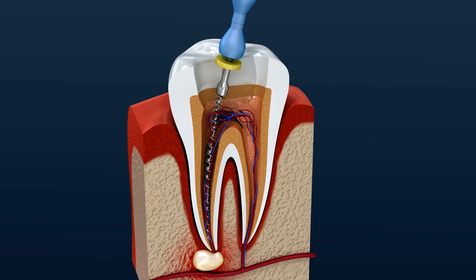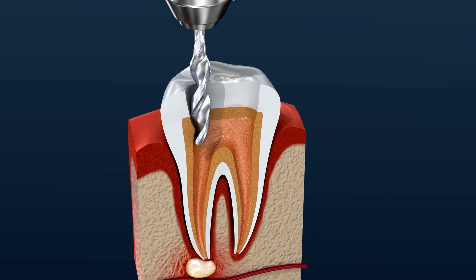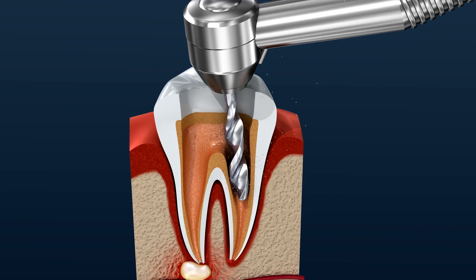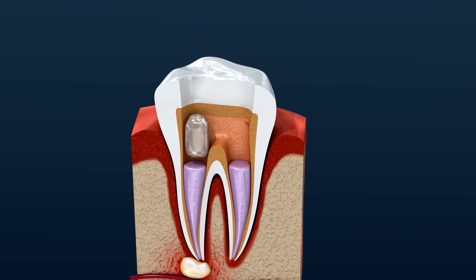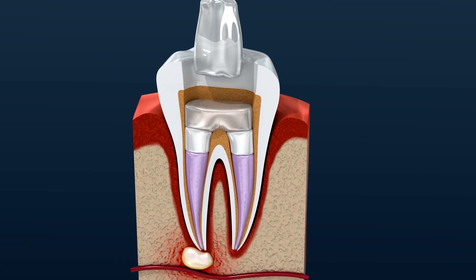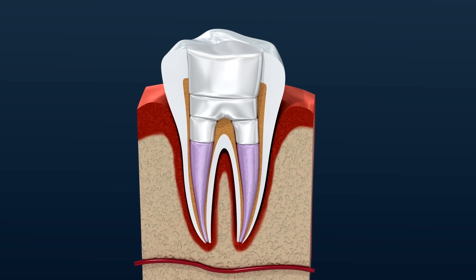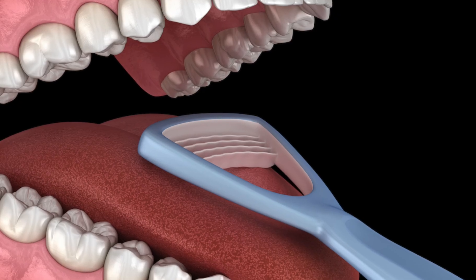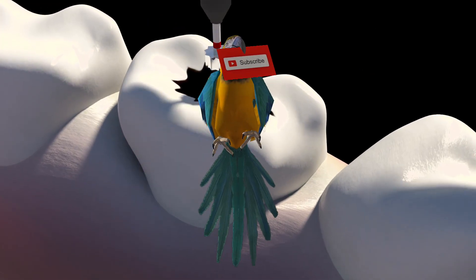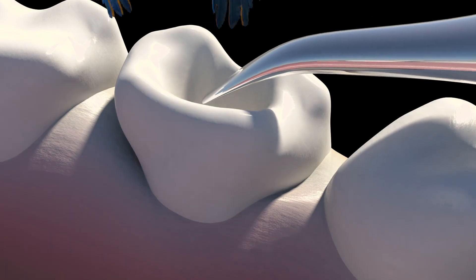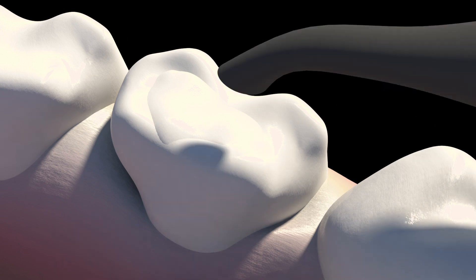For small cavities, the most common treatment is a dental filling. The dentist removes the decayed portion of the tooth and fills it with a material such as composite resin, amalgam, or ceramic. If the decay has reached the dentin or pulp, more extensive treatment may be needed. A root canal is performed when the infection has spread to the pulp — the dentist removes the infected tissue, cleans the inside of the tooth, and seals it to prevent further infection. In cases where the tooth is severely damaged and cannot be saved, extraction may be necessary, and the missing tooth can be replaced with a dental implant, bridge, or denture.